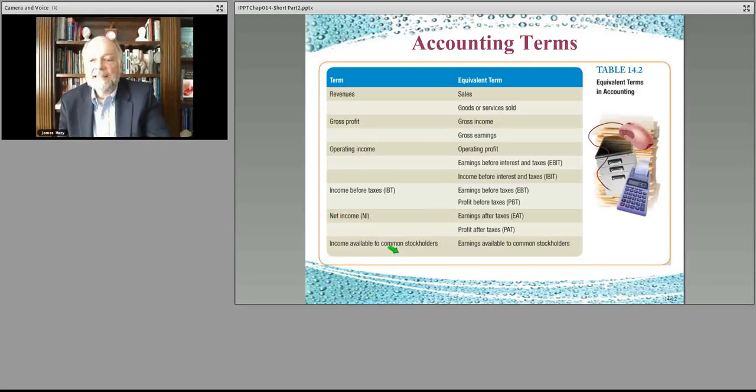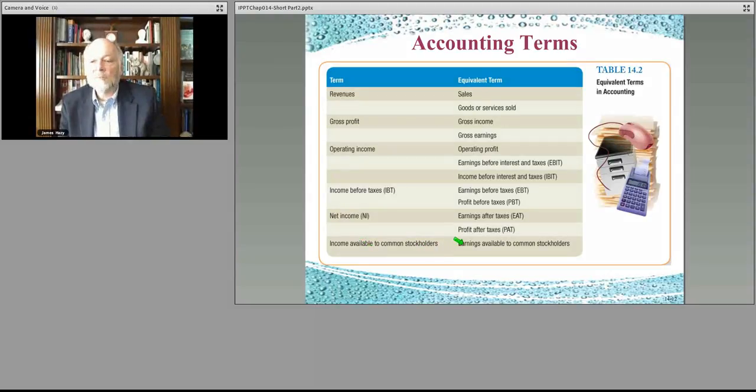Income available to common shareholders is net income less what has to go to preferred shareholders, which oftentimes have an interest payment associated with them. These are only the most common and important terms. All of your accounts in a business have similar terms that people throw around. As an accountant, you know specifically what you're referring to.